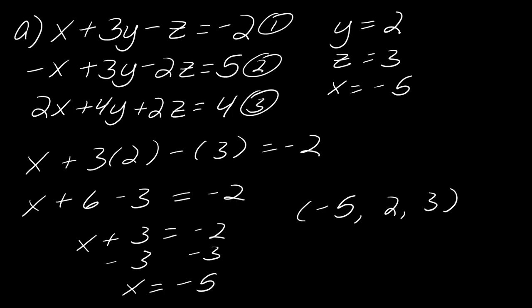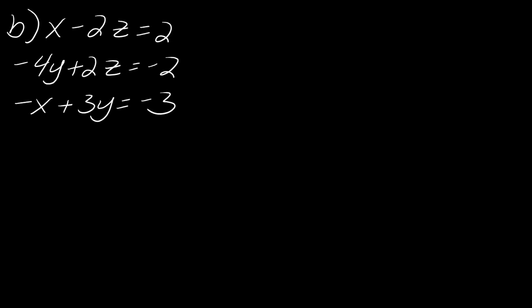So my ordered triple is negative 5, 2, and 3. You'll want to check that by plugging the solution into each of the original equations. Okay, moving on to the next example.